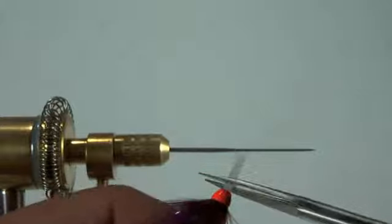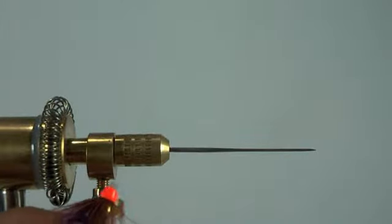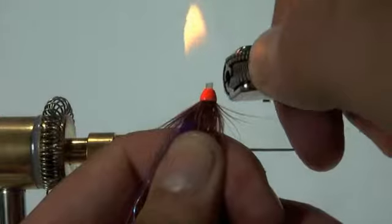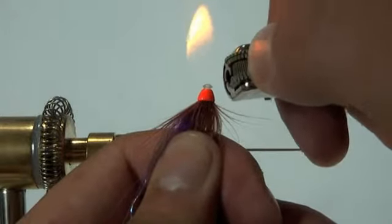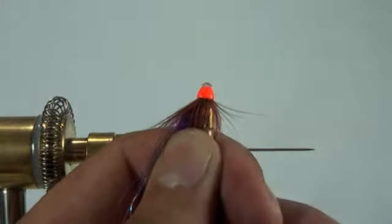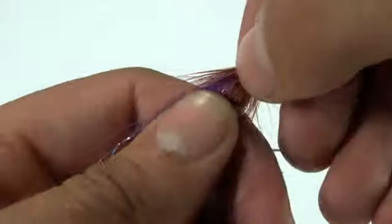Then we're going to snip the liner tubing about a sixteenth of an inch or so in front of the cone head. And then using the blue part of the flame, we're going to curl the liner tubing up so that it locks the cone head in place.